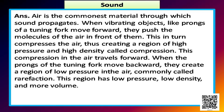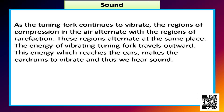When the prongs of the tuning fork move backward, they create a region of low pressure in the air, commonly called rarefaction. This region has low pressure, low density, and more volume. As the tuning fork continues to vibrate, the regions of compression alternate with regions of rarefaction. The energy of the vibrating tuning fork travels outward. This energy which reaches the ears makes the eardrums vibrate, and thus we hear sound.